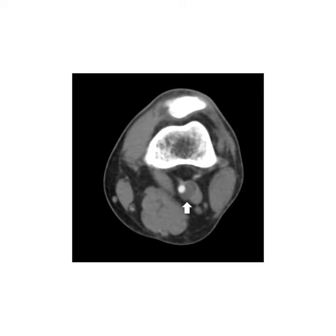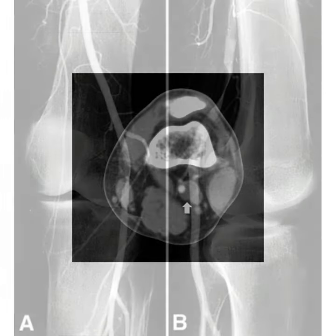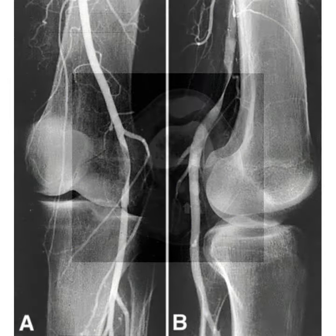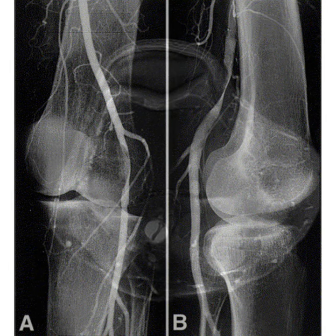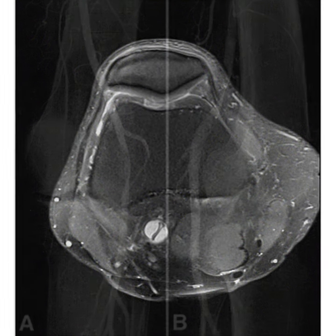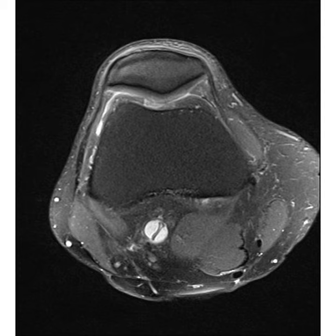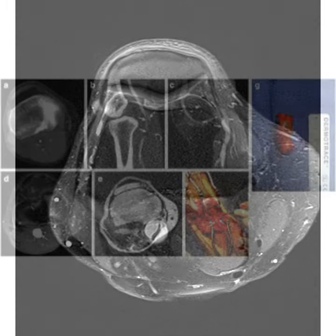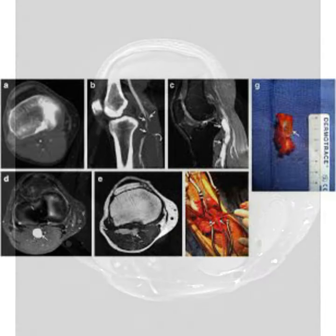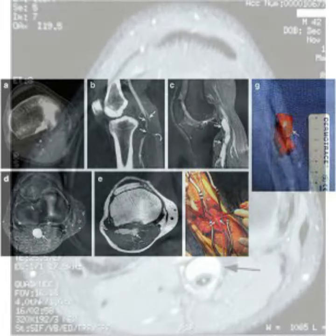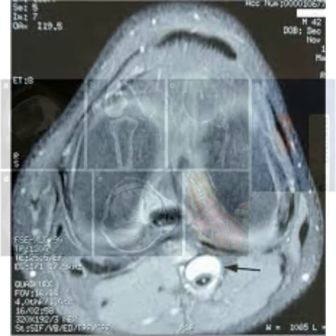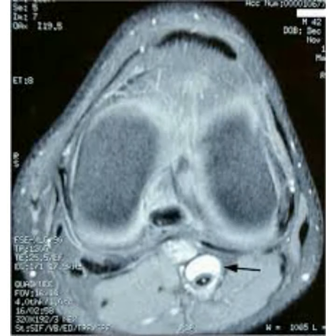Adventitial cystic disease is a rare condition in which a cyst, a fluid-filled sac, forms in an artery or vein. The cyst forms in the adventitia, which is the outermost wall of your blood vessels. The cyst can block blood flow in your artery or vein, especially during periods of movement or exercise.